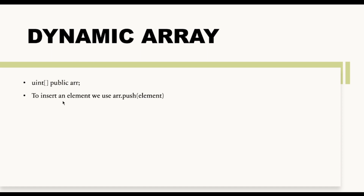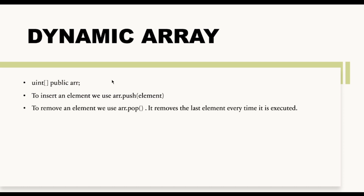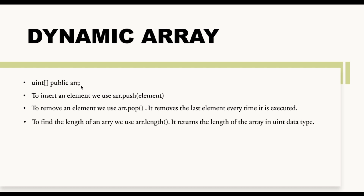To insert elements inside this dynamic array, you use the push method that is available with the dynamic array. If you want to pop or remove an element from this array, you use the arr.pop function, which removes the last element every time it is executed. If you want to find the length of this array, you can use arr.length, which will return the length.